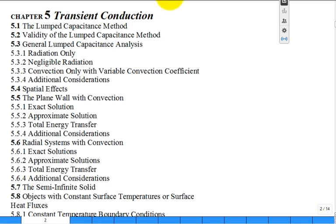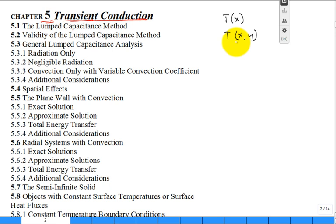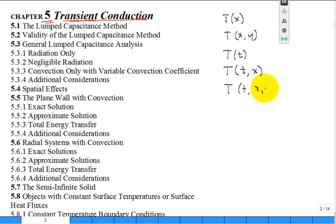Let's move into Chapter 5 dealing with transient conduction. So far we've done steady-state conduction where we solved for temperature as a function of space, including 2D numerical solutions. Now we're adding time — so temperature could be a function of time only, or time and one or more space variables.